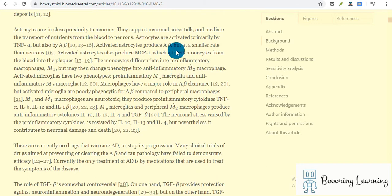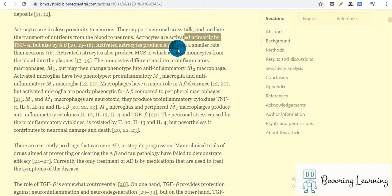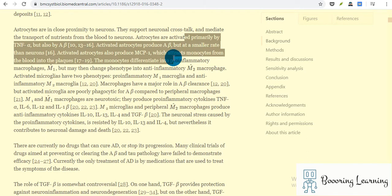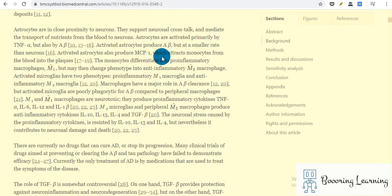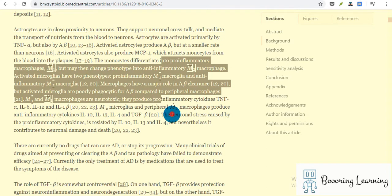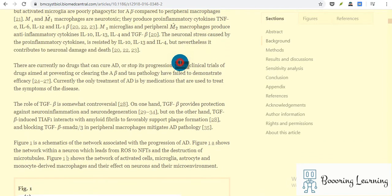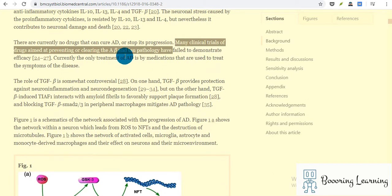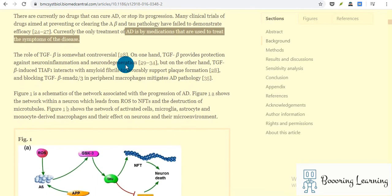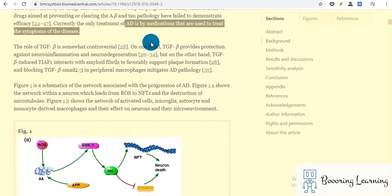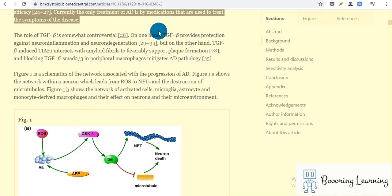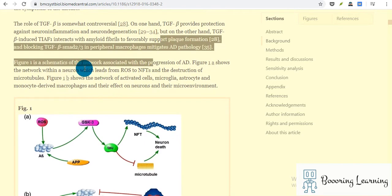They mention here inflammation and activated astrocytes. They mention immunological relation between immunology and Alzheimer's disease and emphasize that there's no drug yet. Currently the only treatment is for the symptoms of the disease; they cannot stop it.